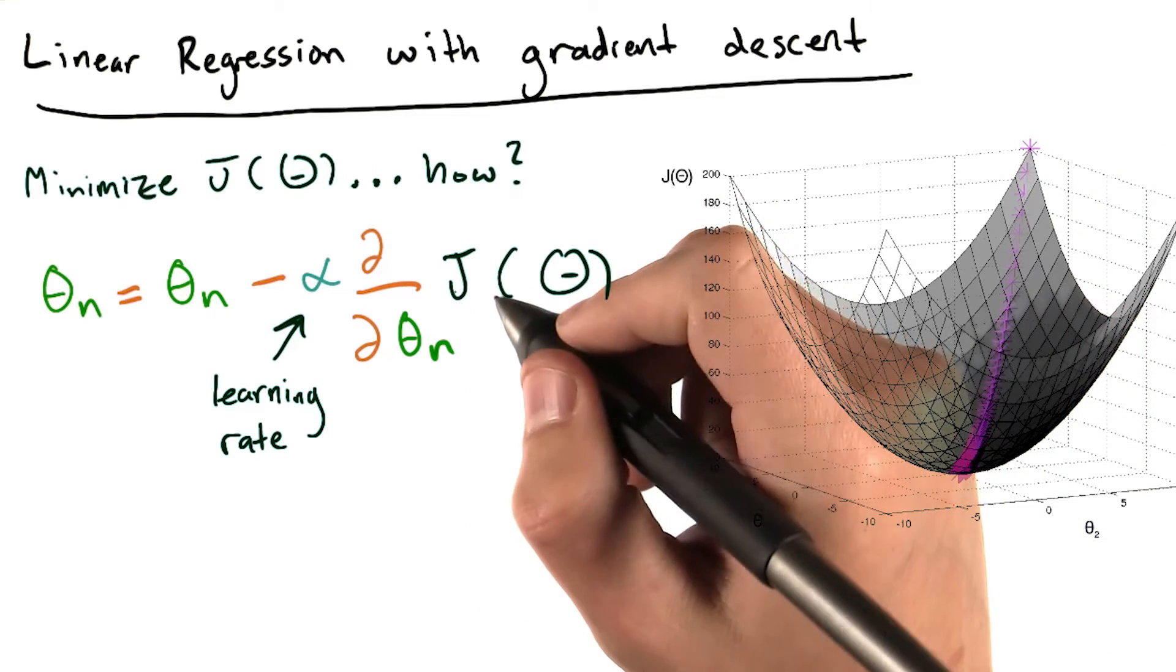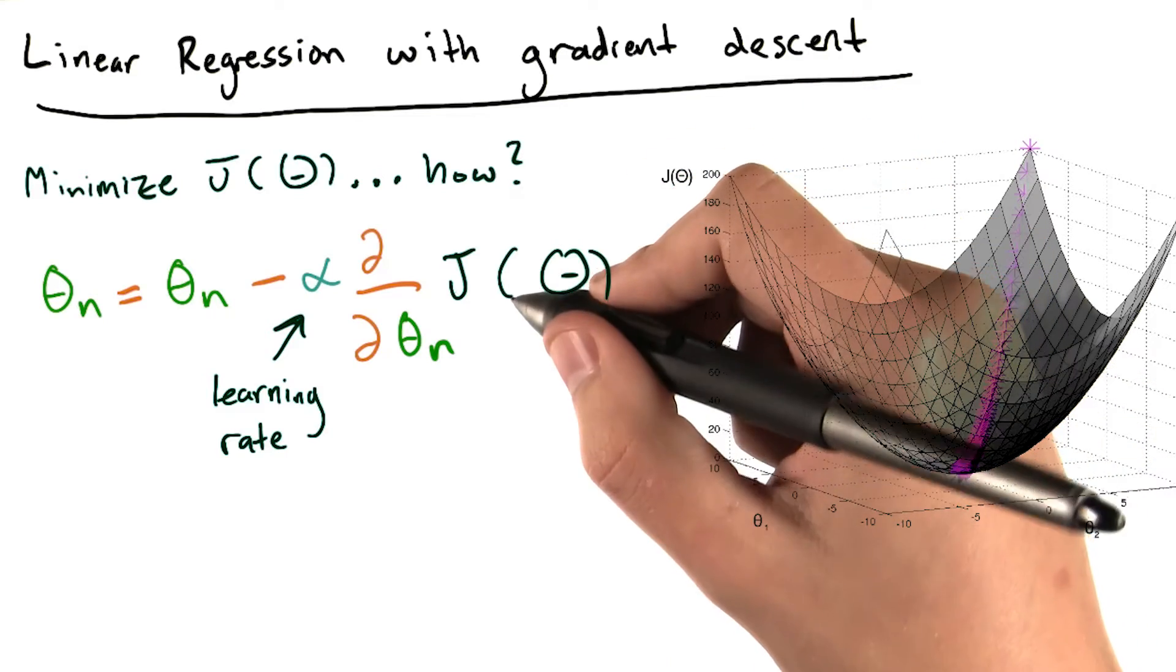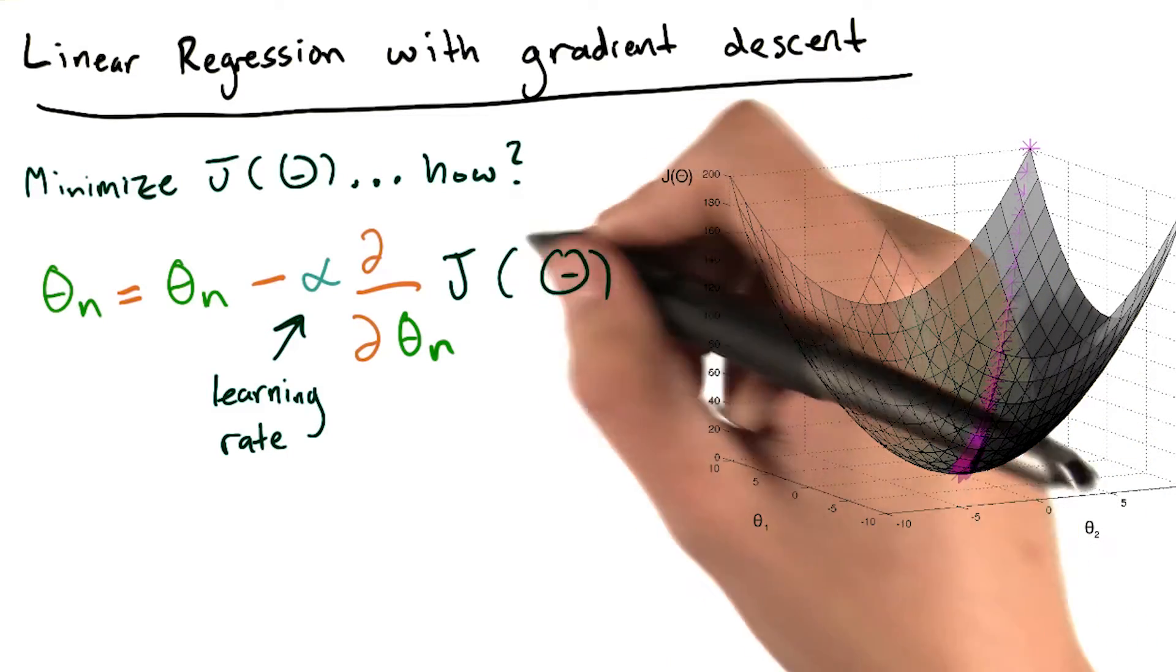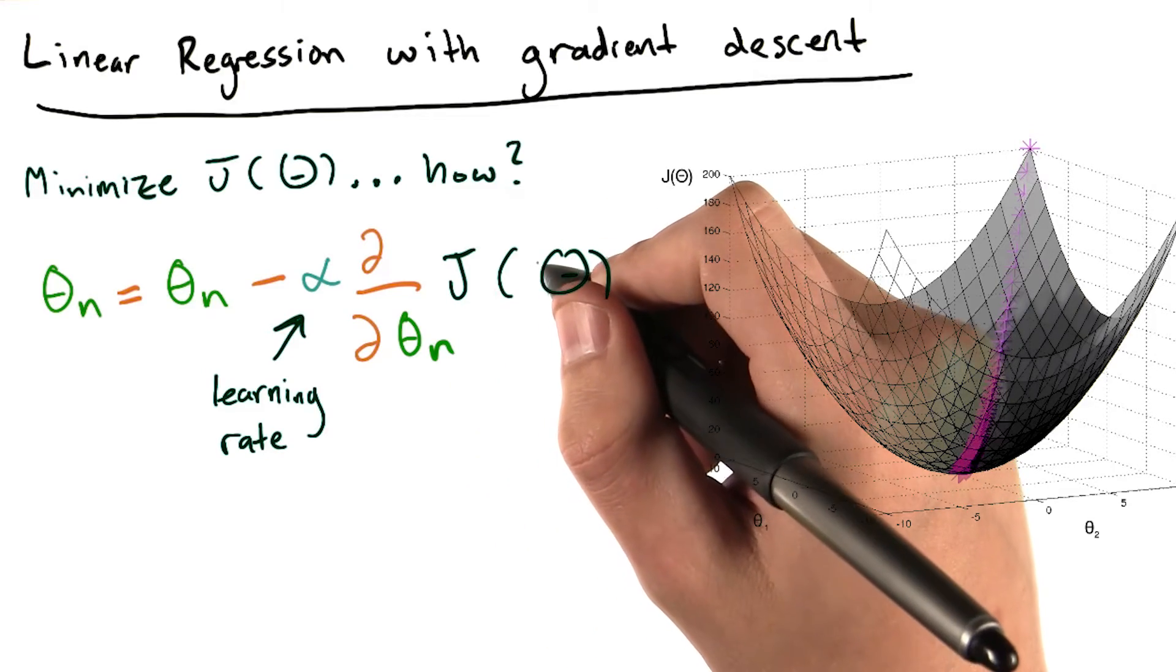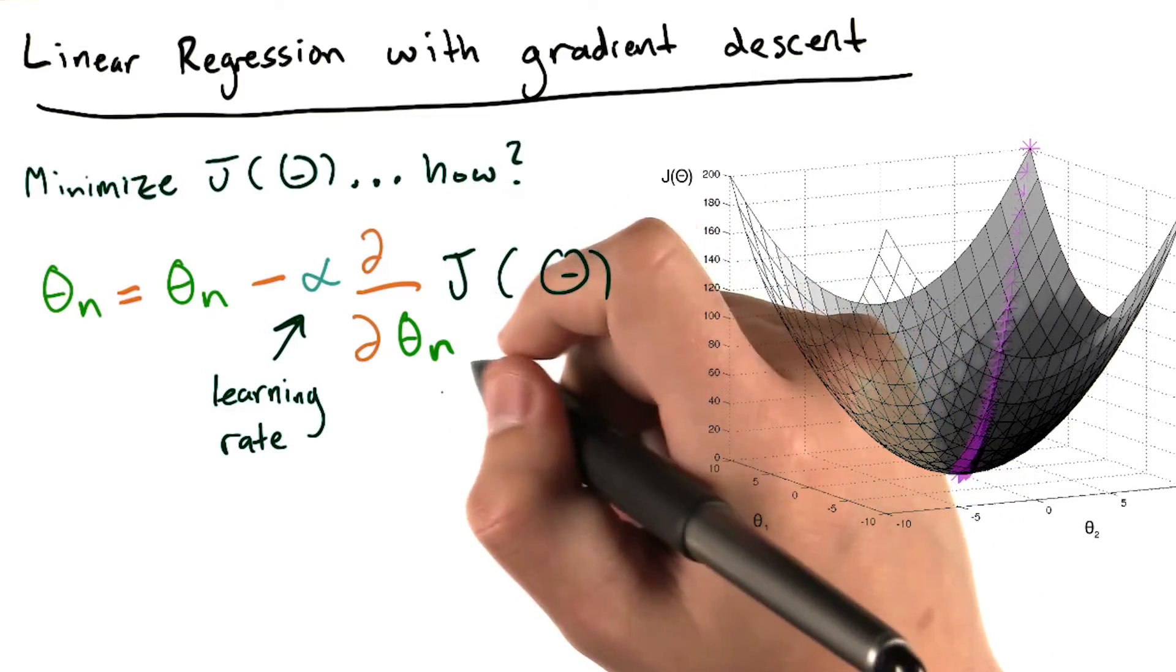I'm not going to go into the calculus here, but based on the cost function J's dependence on the various theta n's, if we actually perform this differentiation, the actual equation that we'll use to update our theta n values is this.